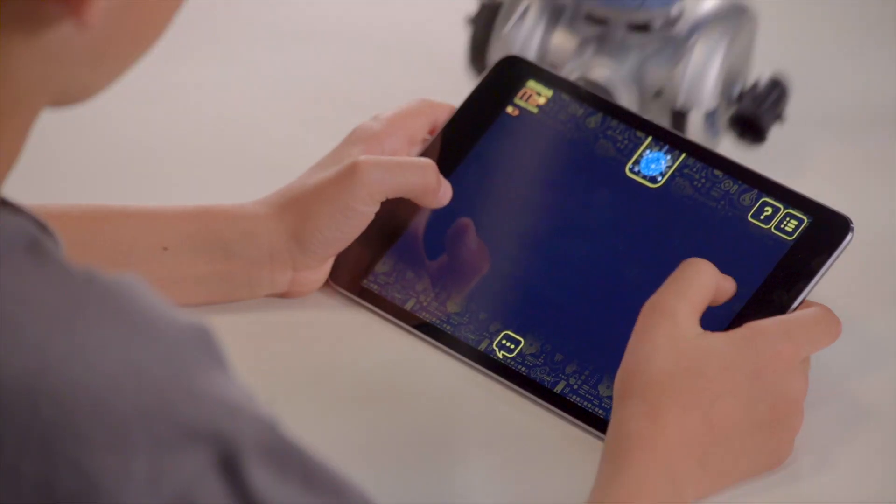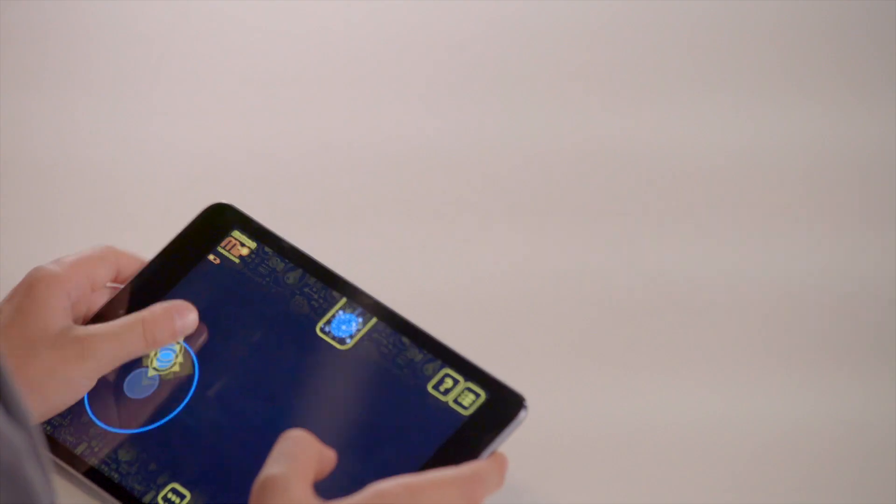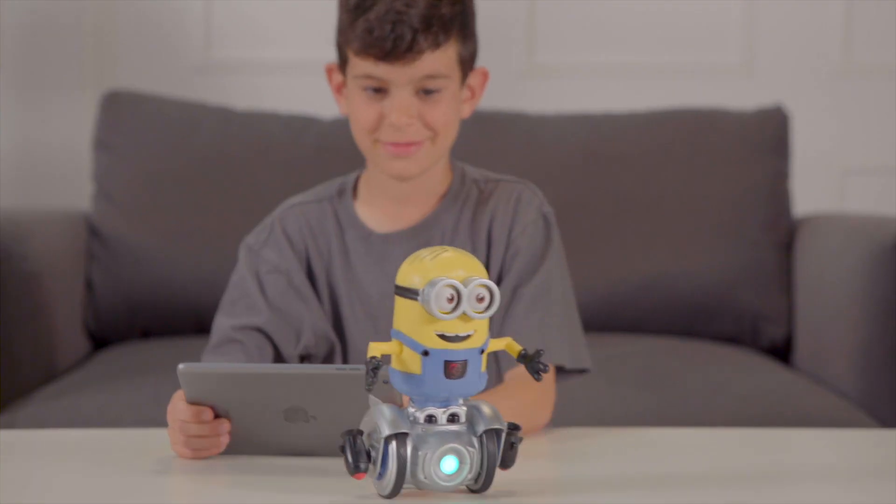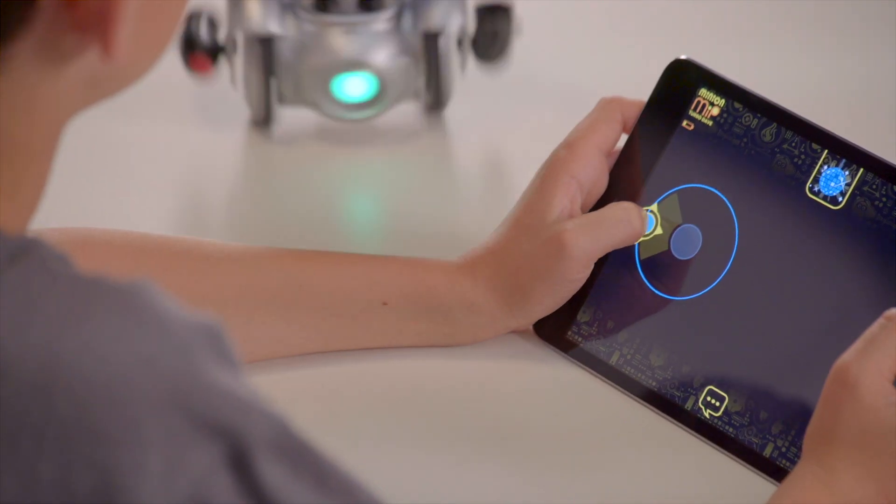One of the in-app features is the drive mode, which is controlled with your thumbs. You can move Turbo Dave forwards and backwards by moving the drive icon up or down. You can also spin him around.